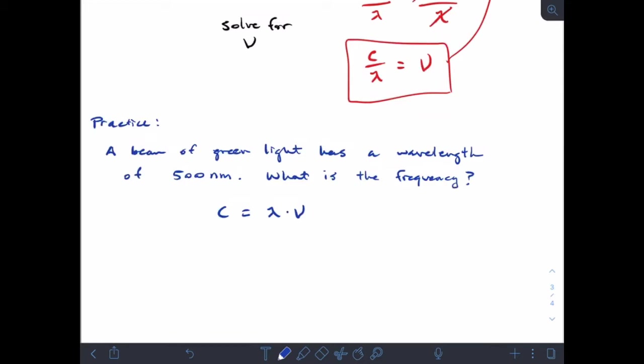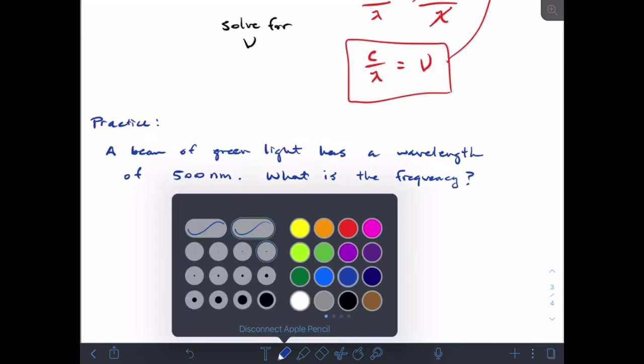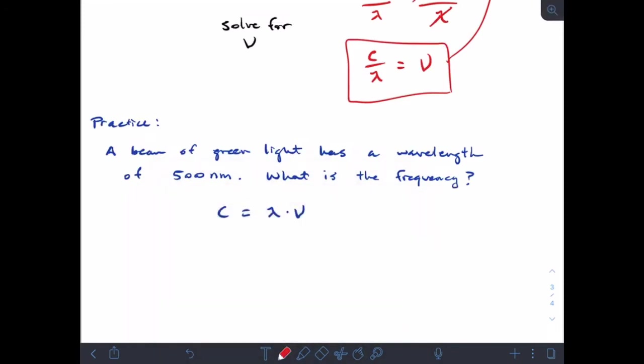If I take and rearrange that equation to solve for the frequency, if I divide both sides by λ, my lambdas go away and I get c over λ equals ν. Here's the trick: the units of c are in meters per second, and right now my wavelength is in nanometers. My units have to match.